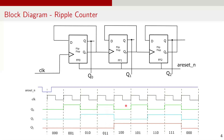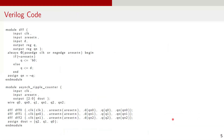On the fourth clock pulse, FF0 toggles from 1 to 0. The falling edge of FF0 Q (rising edge of FF0 QN) toggles FF1 from 1 to 0. The falling edge of FF1 Q triggers FF2, toggling its state from 0 to 1, and the output is 100. This process repeats for subsequent clock pulses, generating a 3-bit binary sequence from 000 to 111. Here is the Verilog code for the asynchronous counter.